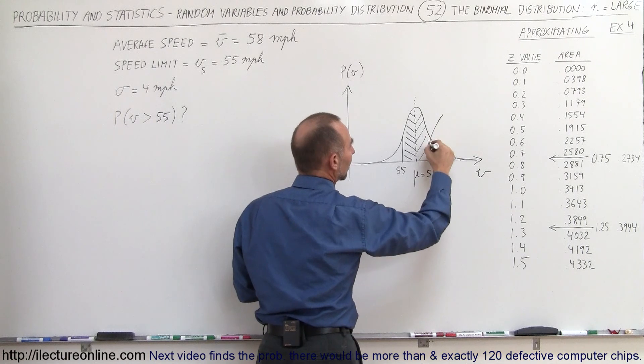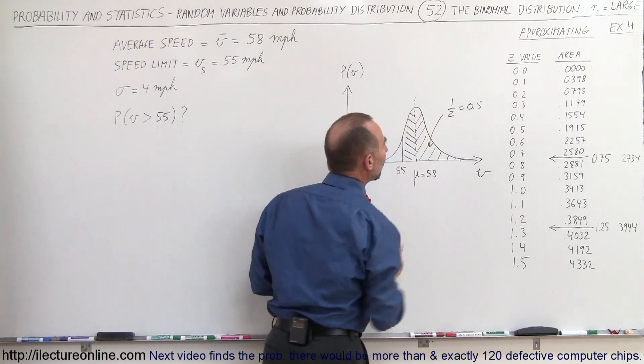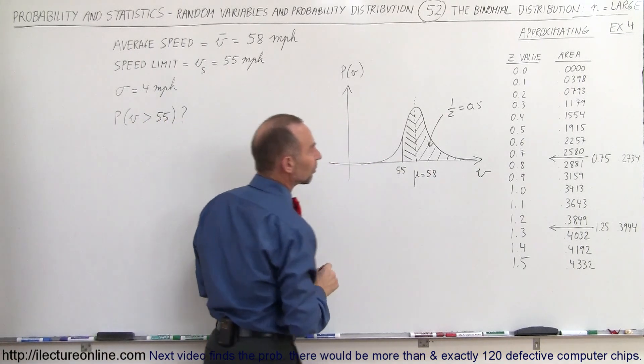Now this area, this sided area, is already one half because that corresponds to one half of the total area underneath the curve. We just need to add this particular value to it.